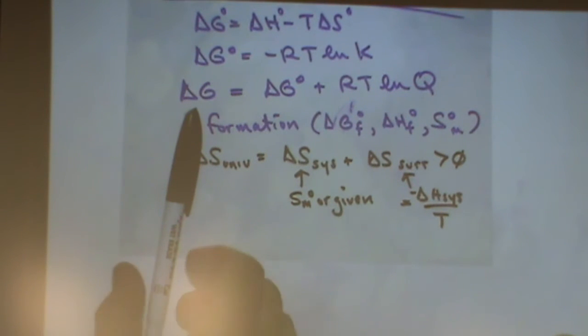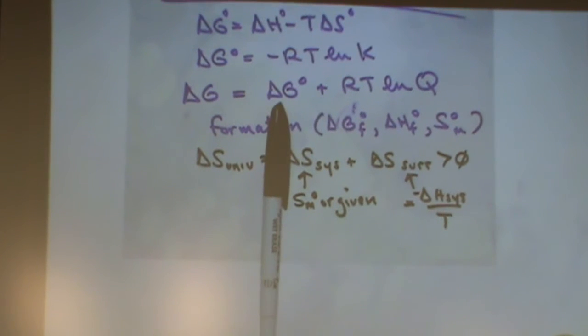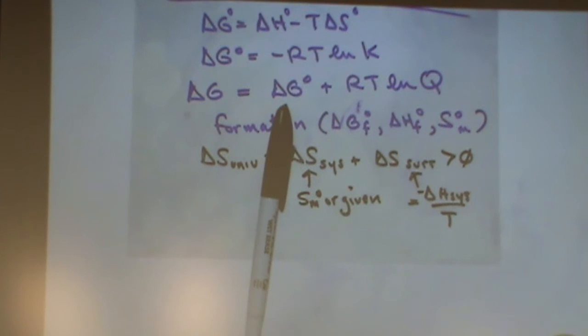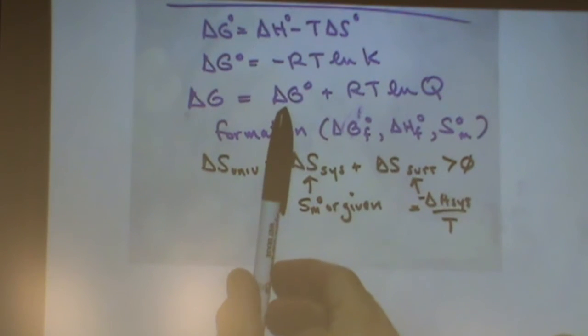When this value here, where my pen is, is equal to zero, that's equilibrium. If delta G is equal to zero at equilibrium, is this equal to zero? If this one on the left is equal to zero, will this one be equal to zero? No. At equilibrium, can we predict this number on the, where my pen is, delta G standard is at? Meaning, do we know if it's greater than zero, less than zero, or equal to zero at equilibrium?